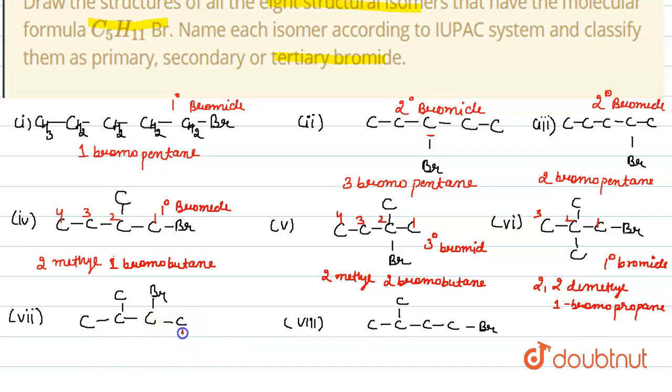Next we are given with here this bromine is secondary bromide, and its name will be 3-methyl-2-bromo-butane.